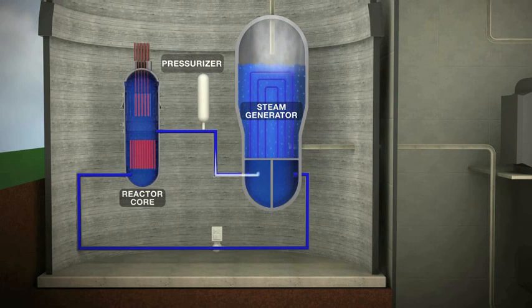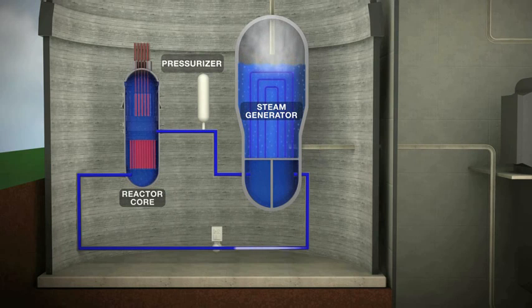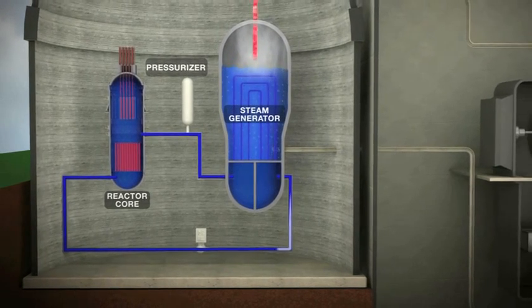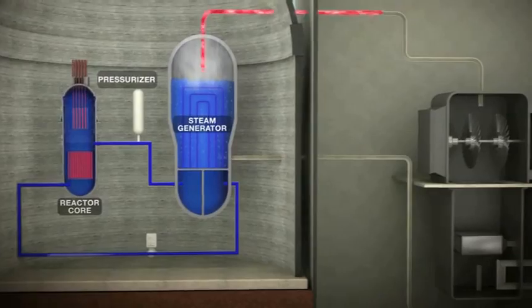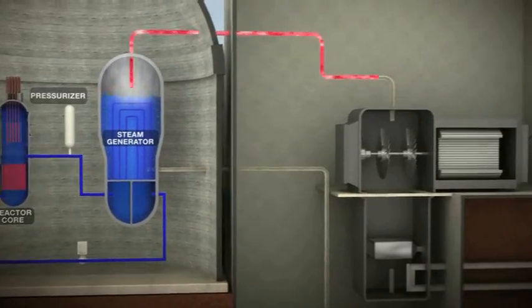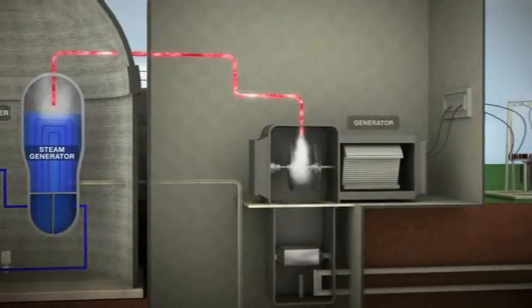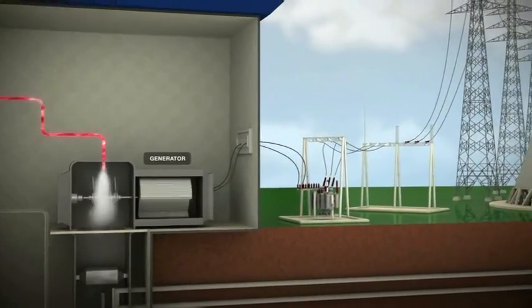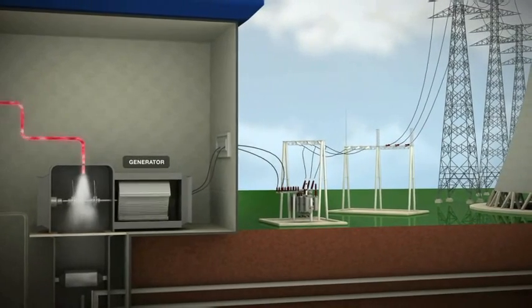After transferring its energy, the water is pumped back to the reactor vessel to be reused. The non-radioactive steam from the steam generator spins turbines that drive the generator to produce electricity.